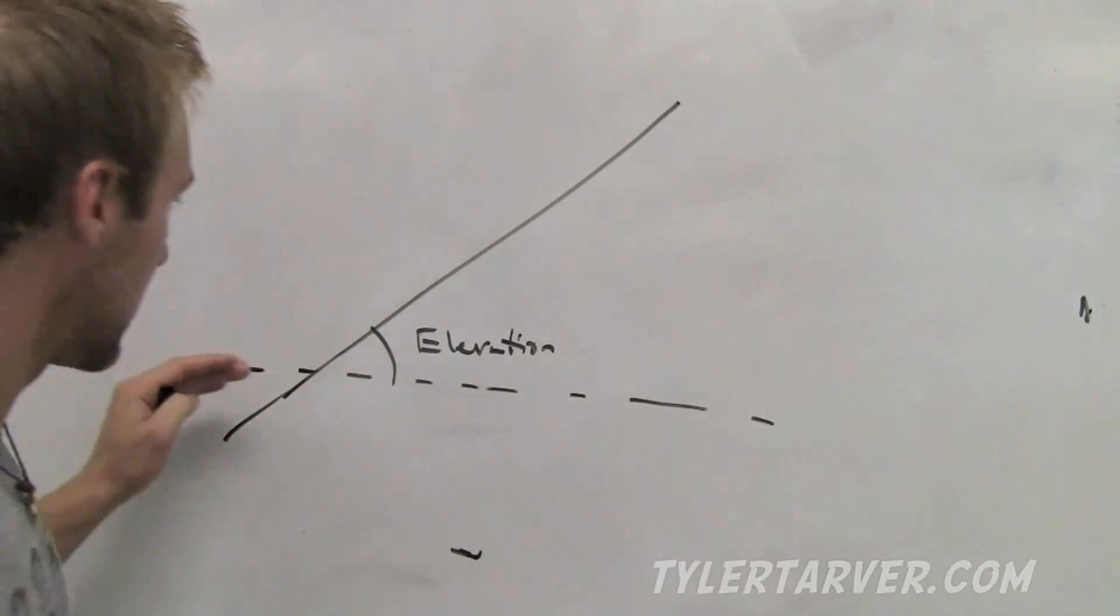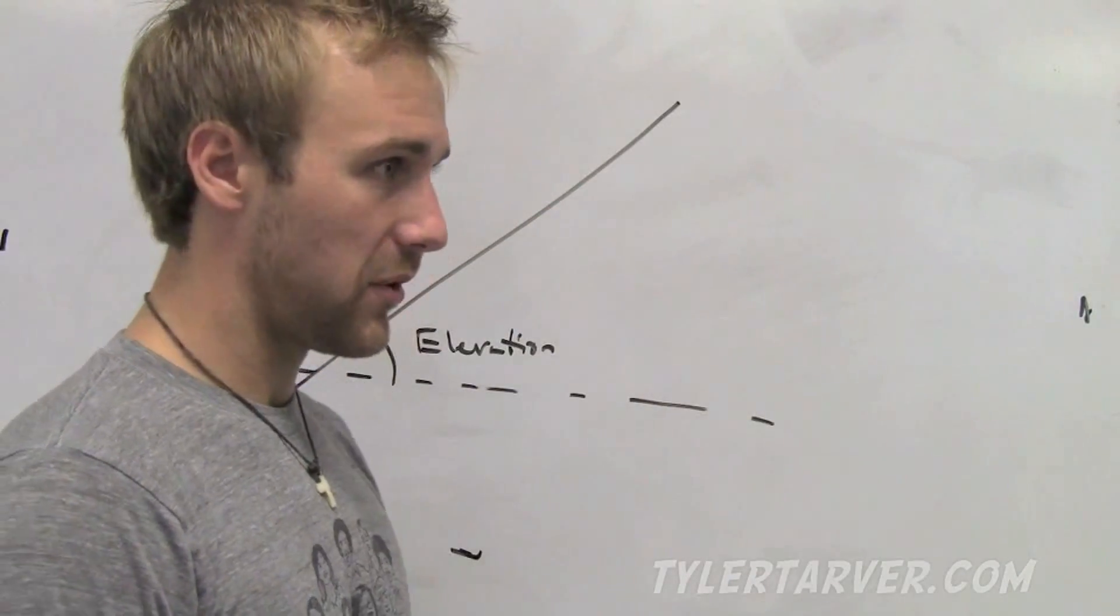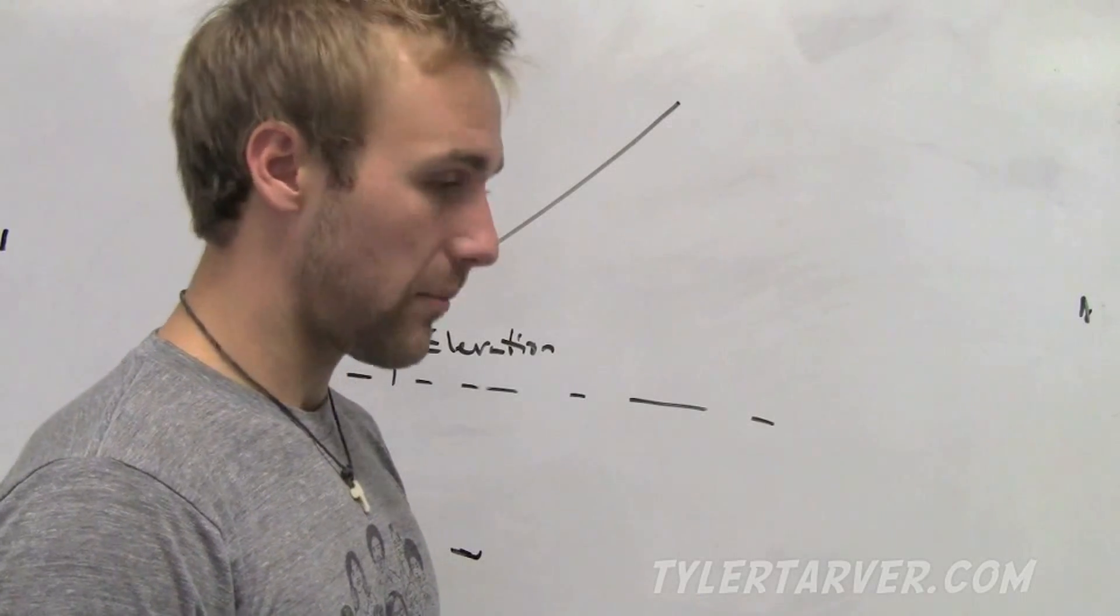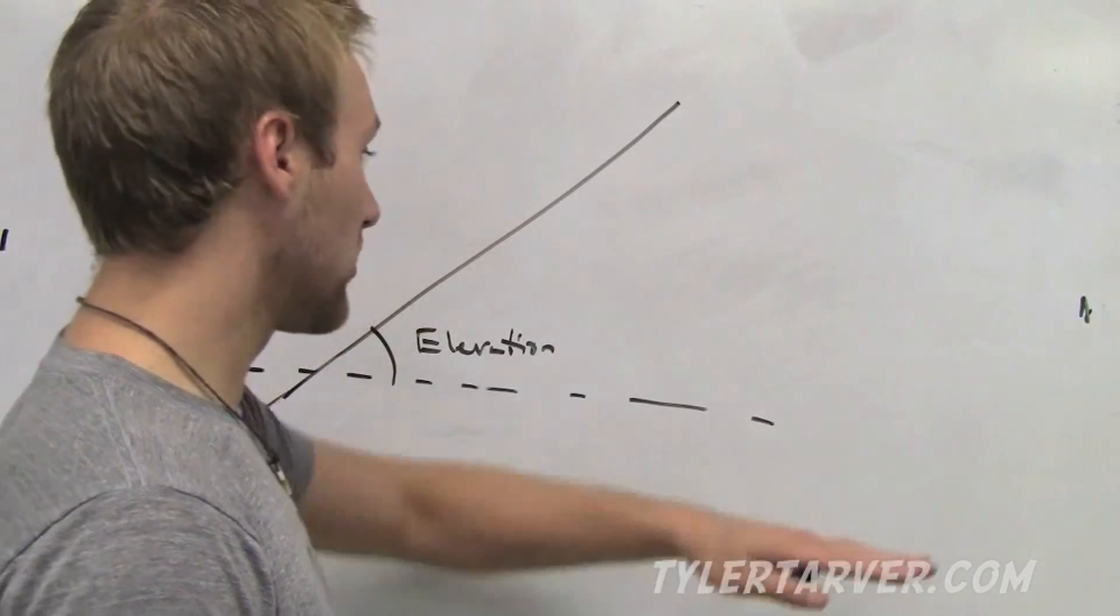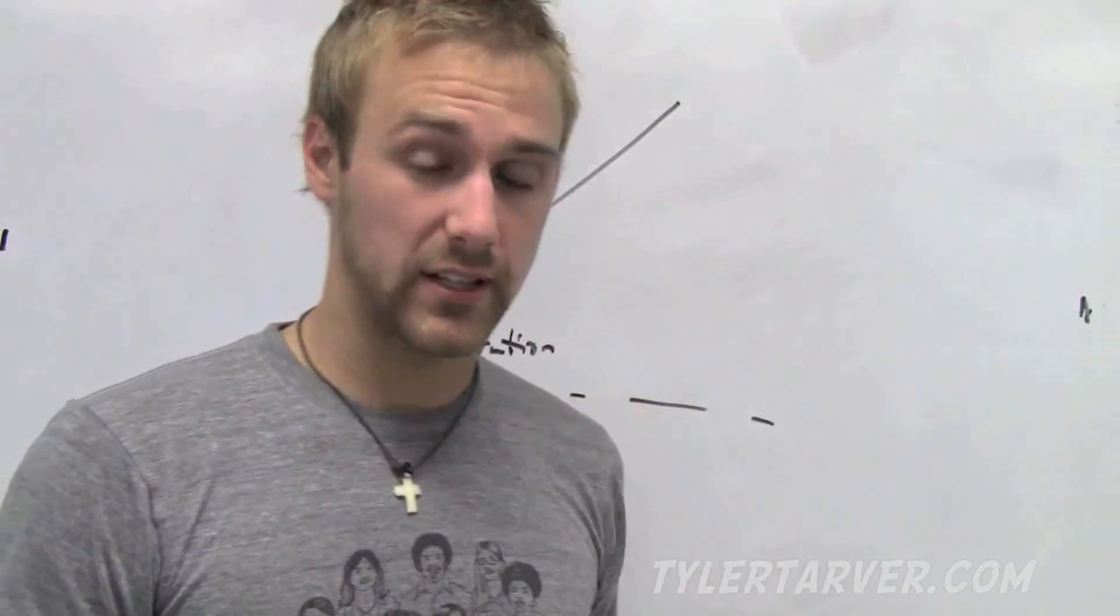Because it is going up. So, pretend this dotted line is our point of view, like where we're looking around. And we look up, we are making an angle of elevation. And that angle is formed from our eye line and what we're looking up at. So that's our angle of elevation.